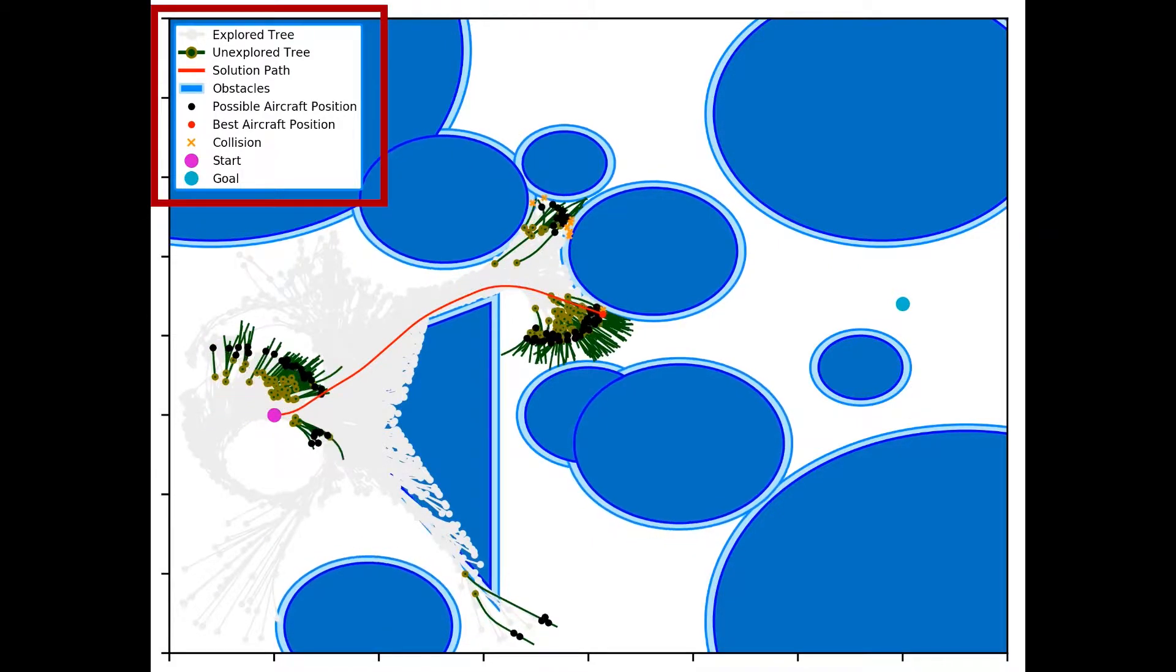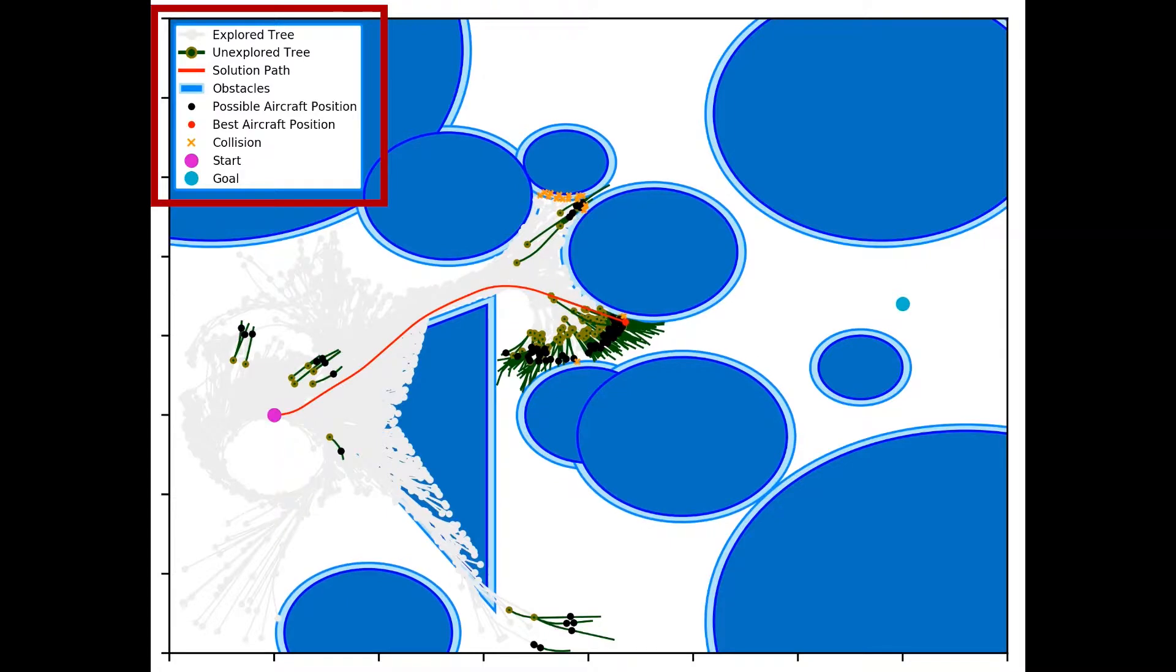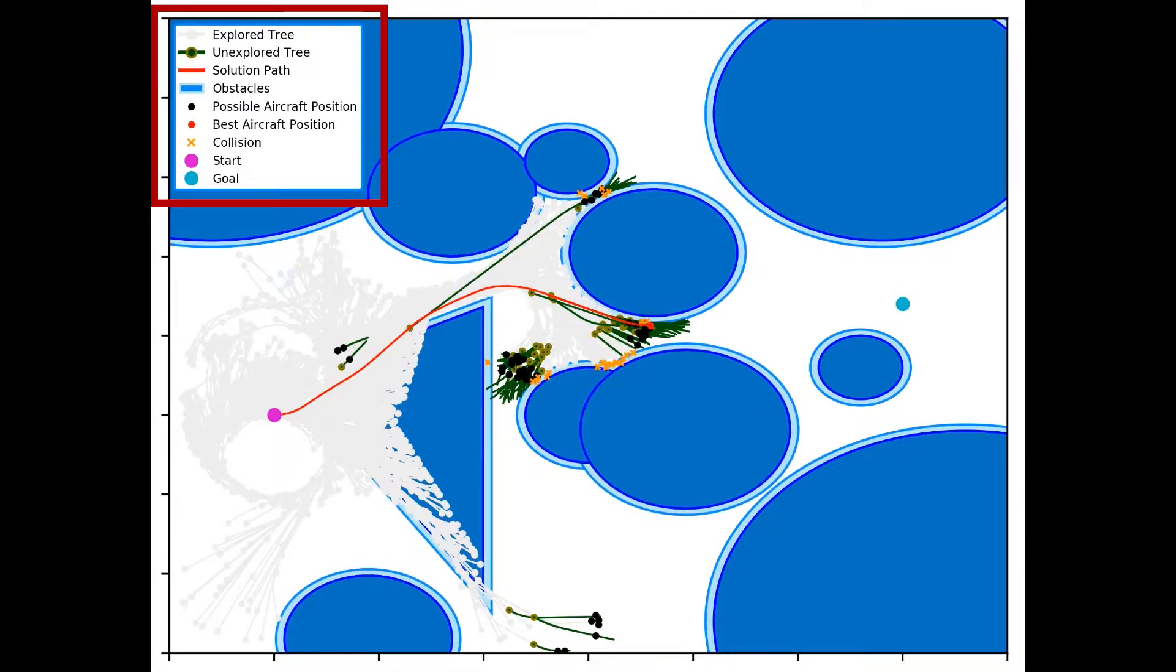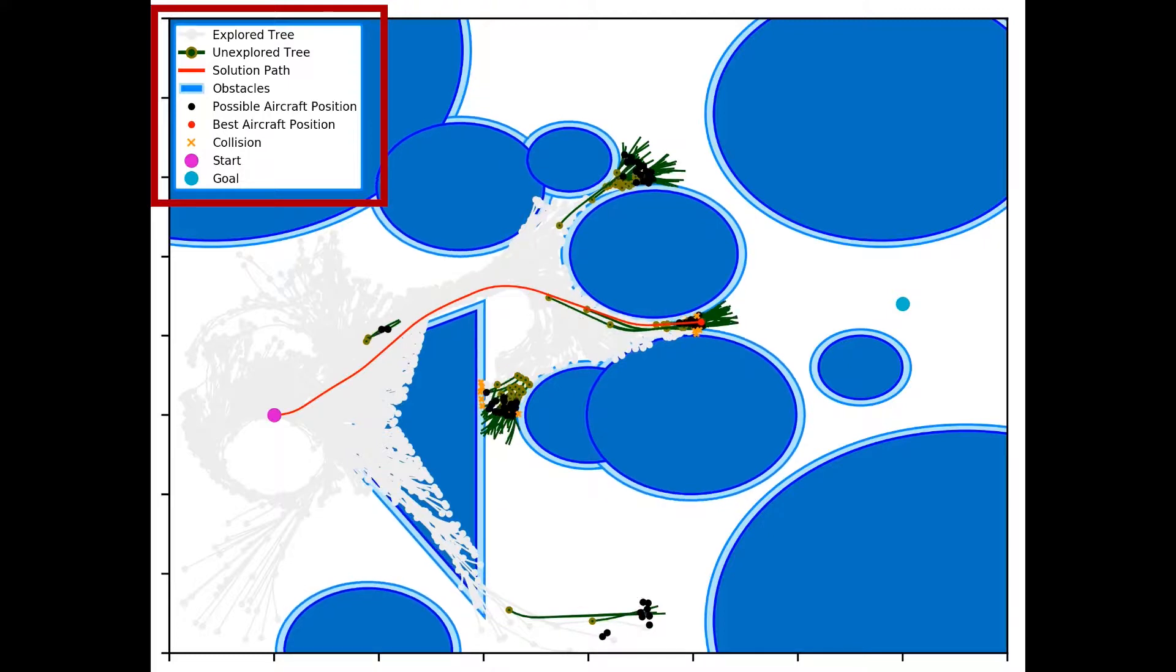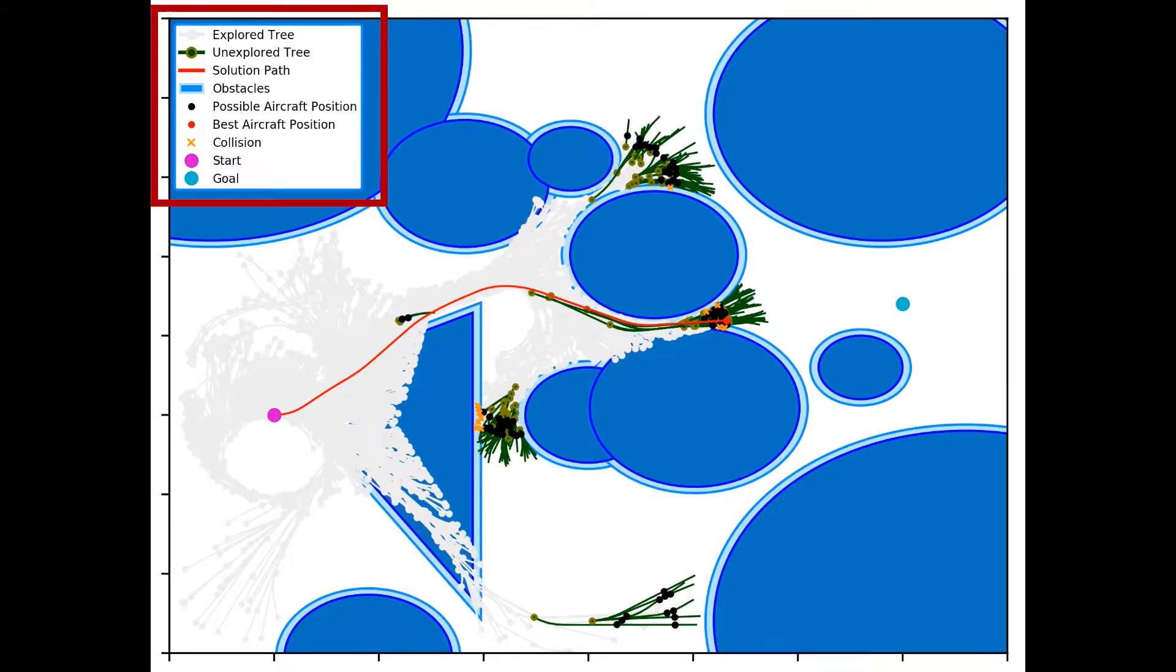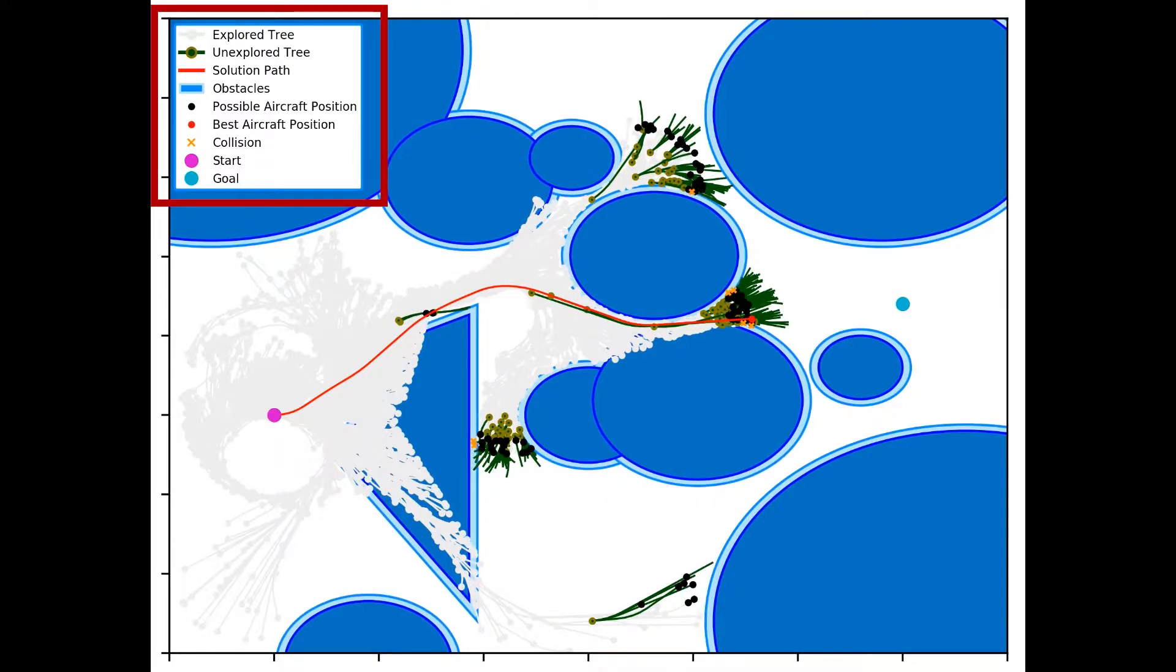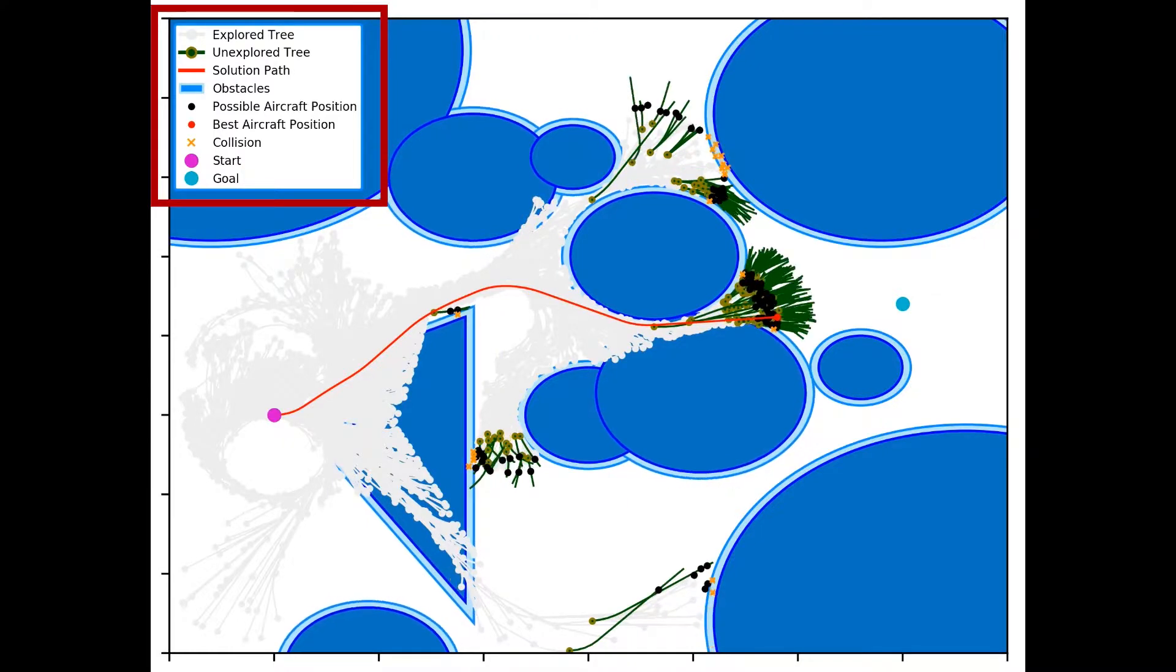There's a legend in the top left corner here, but I just wanted to point out that blue areas are obstacles, areas you want to avoid. The red line is the best path that the algorithm found, and all these black dots are other positions the aircraft could have been in at this point in time had it chosen another path.